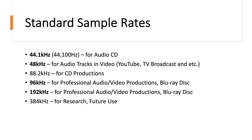The common sample rates, particularly in music production, are 44.1, 48, 96, and 192 kilohertz. 44.1 kilohertz — in other words, 44,100 hertz — has been the standard sample rate for audio CD since the early 1980s. 48 kilohertz is probably the most widely used sample rate now because it's the standard sample rate for audio tracks in video recordings, including YouTube videos. So typical camcorders would record the sound at 48 kilohertz by default.